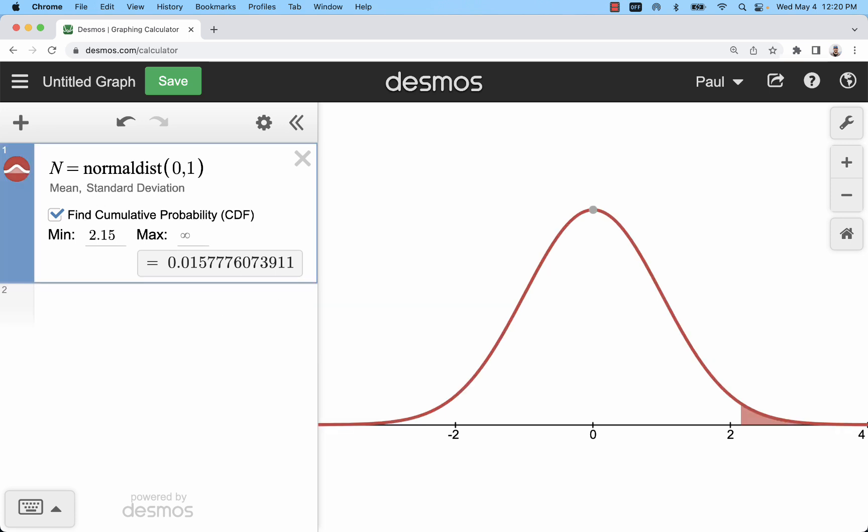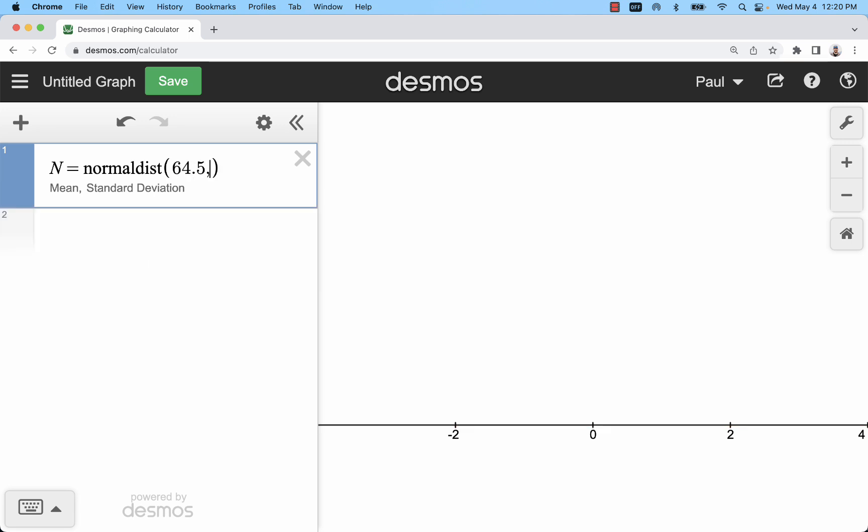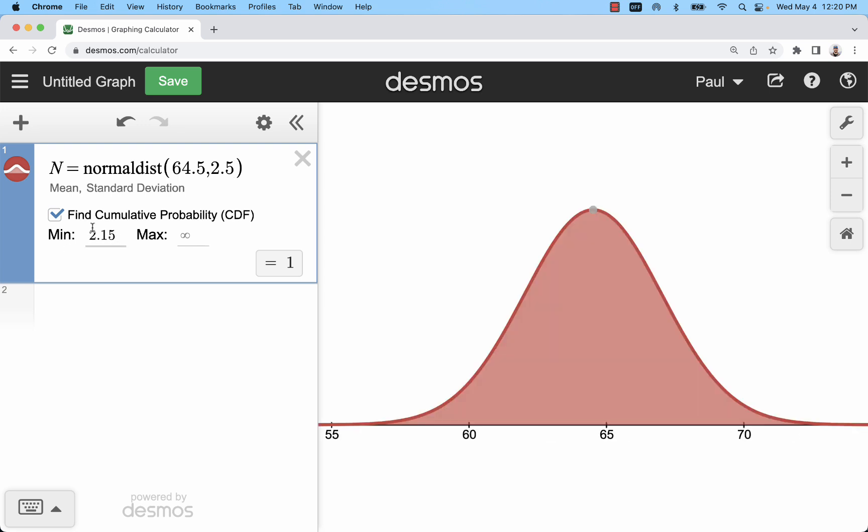So that was a standard normal distribution with the mean of zero and a standard deviation of one. Let's say I'm looking at a normal distribution with a mean of 64.5 and a standard deviation of 2.5. I don't want to look at this anymore. There's my full distribution.